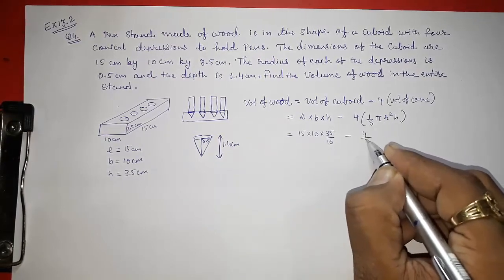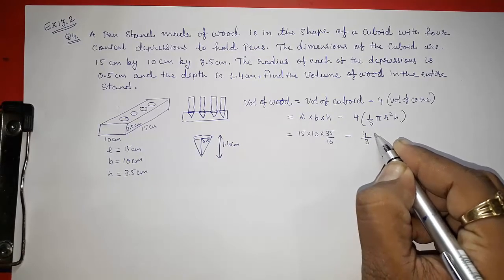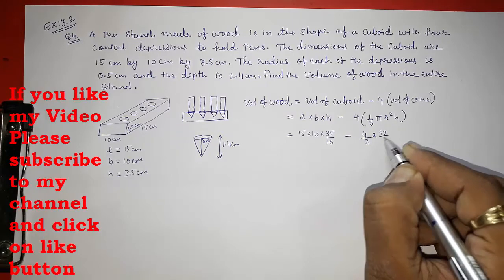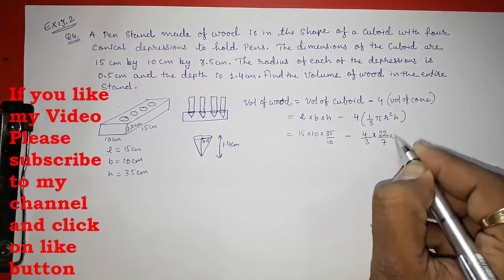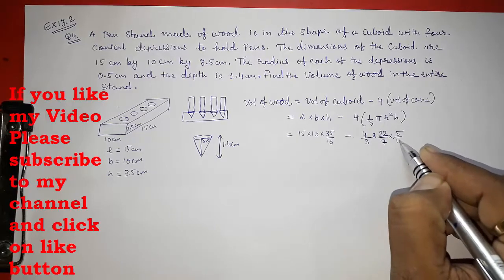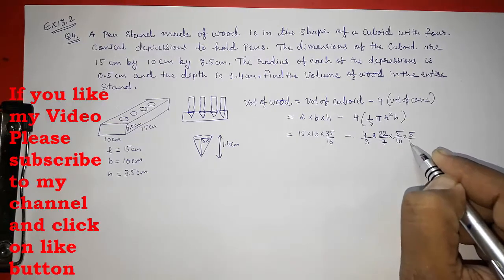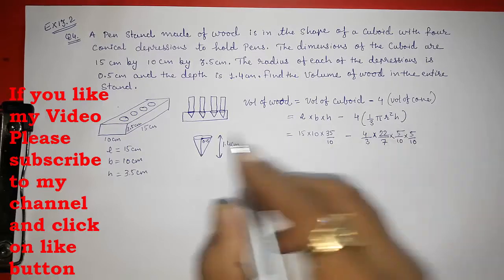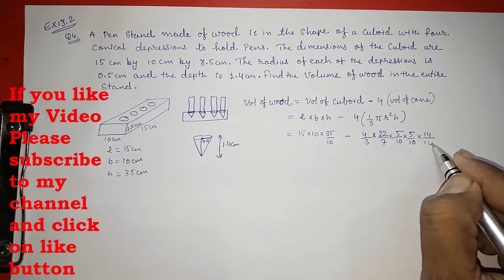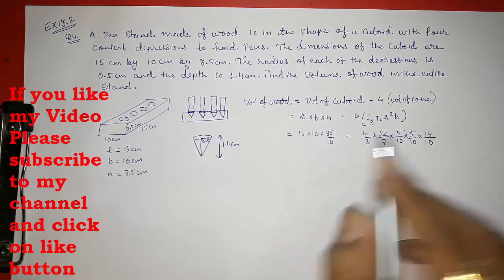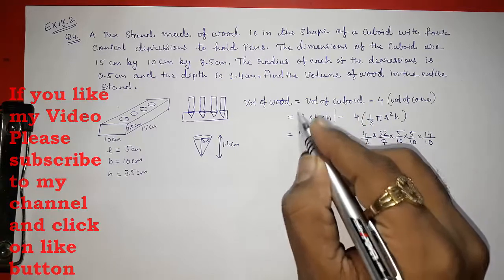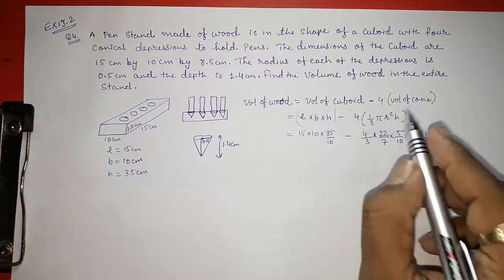Now minus 4 I am going to multiply. So this will become 4 by 3 into pi. The value of pi is also not given to us, so directly I am going to write into 22 by 7. And then instead of radius, they had given us 0.5, so I am going to write 5 by 10 into 5 by 10. And height is 14, so I am going to write 1.4, 14 by 10. Now we can cancel if you want to. First, we have to solve this, then we have to solve this, then we can subtract.